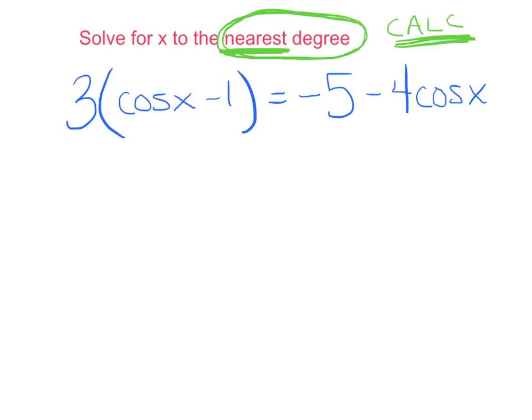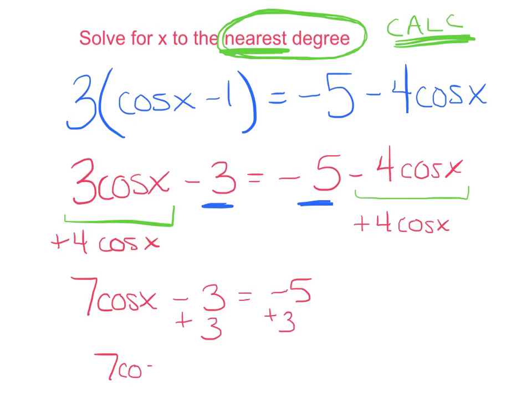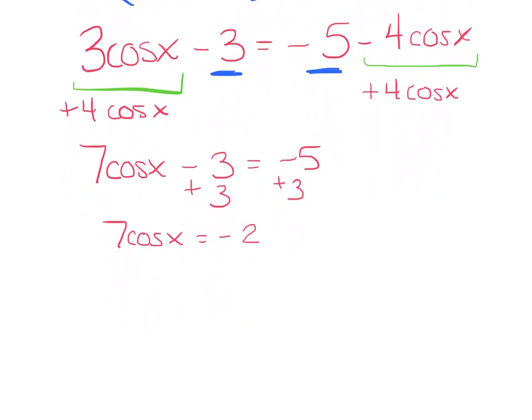So I would say I've got 3 cos x minus 3 equals negative 5 minus 4 cos x. And just like a simple algebra problem, I want to put the like terms on one side, so I want to put my cosines on the same side, and I want to put just my constants on one side. All right, so I'm going to add 4 cos x to both sides. So I've got 7 cos x minus 3 equals negative 5, and then I want to add this 3 over. I want my constants on one side. So 7 cos x, that gives me a negative 2. All right, now my goal, remember, is to get cos x by itself, so I'm going to divide both sides by 7. So I've got cos x equals negative 2 sevenths.